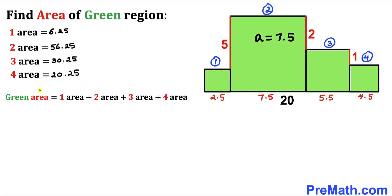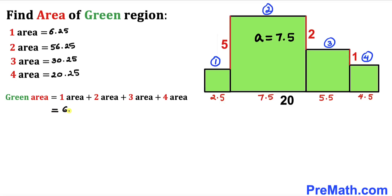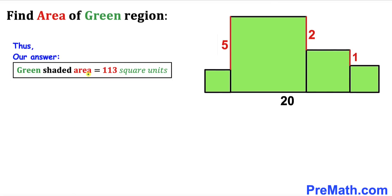For the final step, the total green shaded area equals 6.25 plus 56.25 plus 30.25 plus 20.25, which equals 113 square units. So the total green shaded area is 113 square units. Thanks for watching, and please don't forget to subscribe to my channel for more exciting videos!